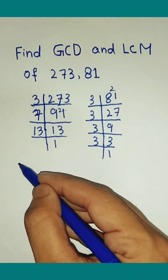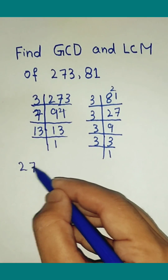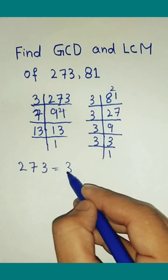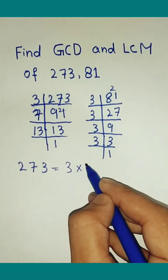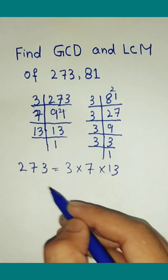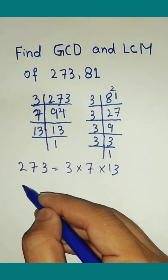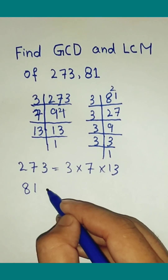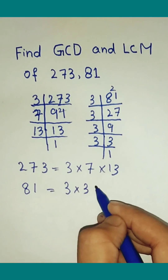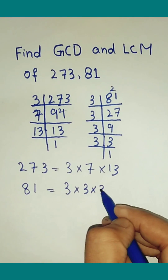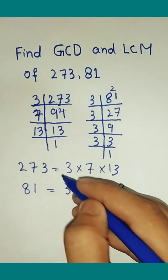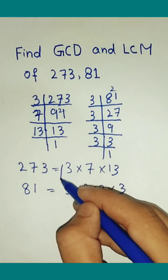273 equals 3 x 7 x 13. 81 equals 3 x 3 x 3 x 3. Now find their common elements.